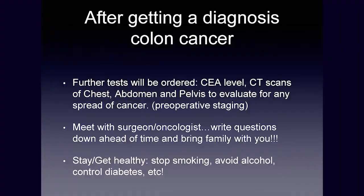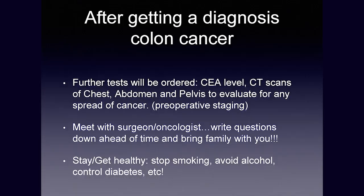What happens when somebody gets a screening colonoscopy and there's something suspicious for colon cancer? First, that tissue needs to be biopsied and sent to the pathologist — usually takes a few days to process. Often if it's big and bulky enough, the gastroenterologist will say upfront that this is really worrisome for cancer. A CEA level — a special tumor marker blood test — will also be ordered, which we can use after surgery to get some idea of whether or not the cancer is coming back.